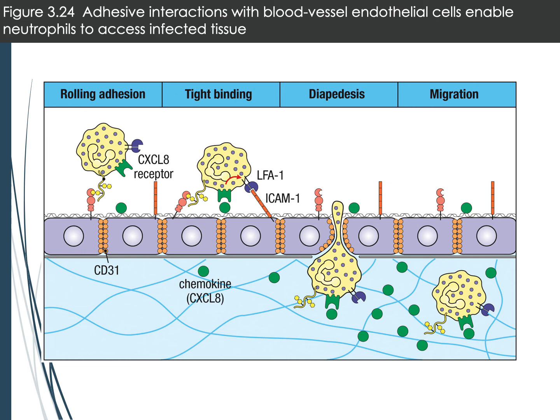The term diapedesis and migration are preferred over extravasation (a term typically used for cancer cells) when describing how neutrophils enter affected tissue. Some textbooks use cancer terminology for immune cells, but diapedesis and migration are more appropriate terms.